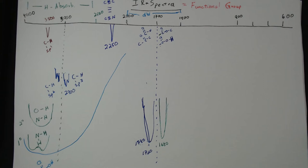If there's a benzene ring right next to the carbonyl, every one of these four functional groups immediately shifts to the 1,690s. So either side of 1,700 — really close to 1,700 — gives very strong absorptions. If the carbonyl is on the higher side, the benzene ring is not touching the carbonyl; if it's on the lower side around 1,690, the benzene is right next to the carbonyl. That could be a clue: the normal range for carbonyls is the 1,690s up to about 1,740.